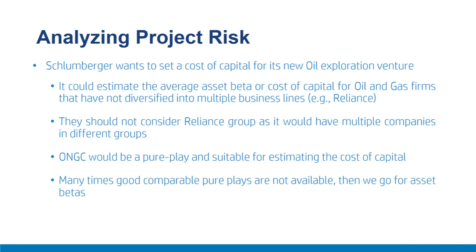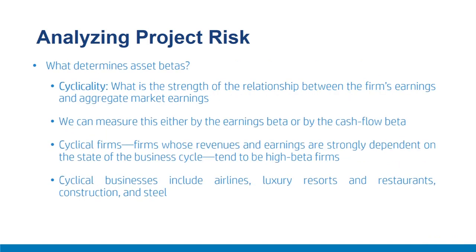Consider Reliance Group, which combines media, software, oil and gas, retail, and telecom — it is not a pure play. ONGC, by contrast, is a large company purely in oil and gas exploration. Suppose Schlumberger wants to set a cost of capital for a new oil exploration venture — it could estimate the average beta for undiversified oil and gas firms as comparable. The trick is picking comparables with business risks similar to the project. When good comparables are unavailable, the financial manager must exercise judgment, considering the determinants of asset betas.